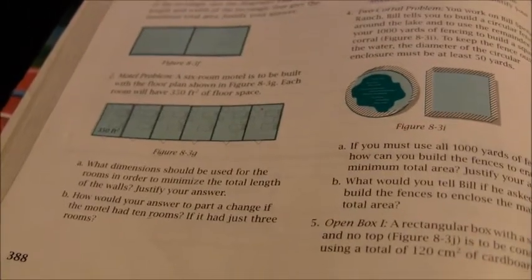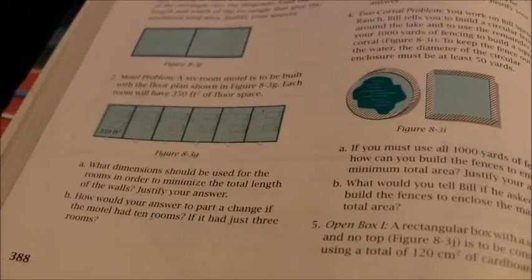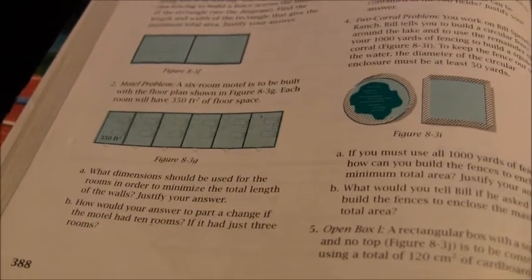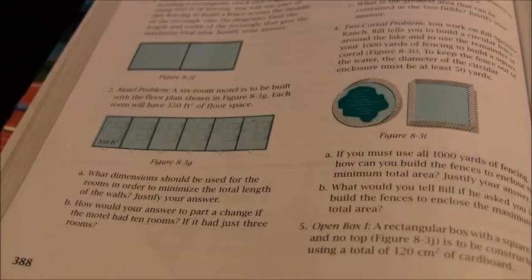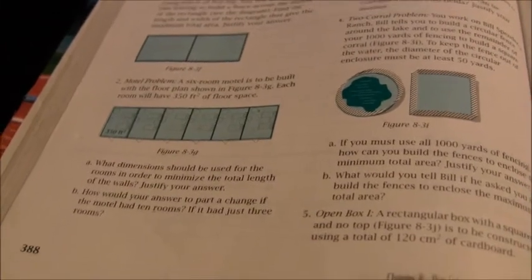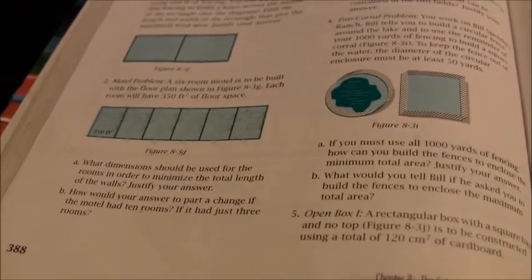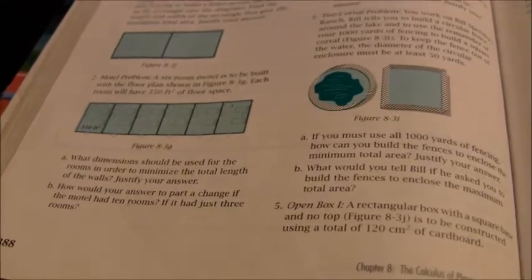In the hotel, the rooms are supposed to be 350 square feet. There are supposed to be six rooms in this motel, I suppose a motel six, so to speak, and I want to find the dimensions for the rooms that result in the minimum total length of the walls.